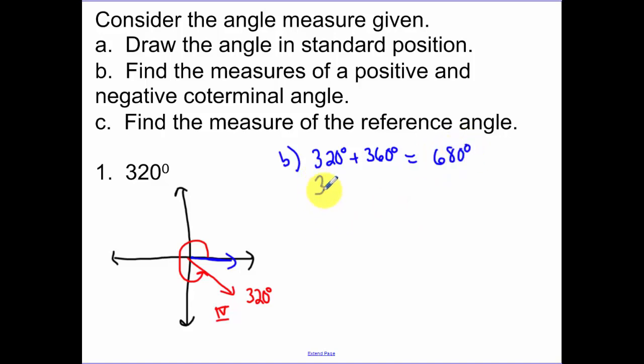If I take my angle and I subtract 360 from it, that gets me a negative angle. That gets me, if I were to rotate down that way, a negative 40.